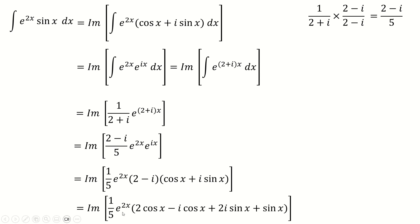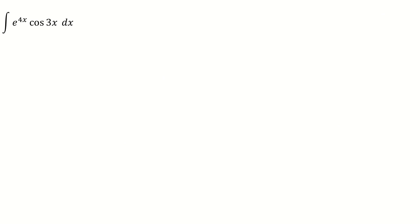So the imaginary part of this is, of course, 1 fifth e to the 2x into, I guess, minus cos x plus 2 sine x, or 2 sine x minus cos x. And that there, as long as you remember that plus c will be our integral. Really nice little method, obviously super quick and easy. So we'll do it again.